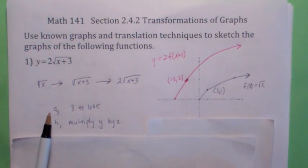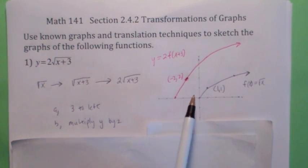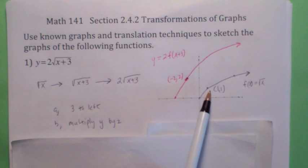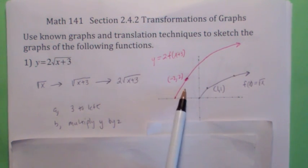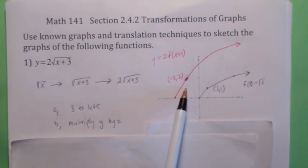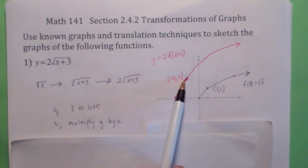The graph becomes this. You can think of it point-wise. What happens to the point (1, 1)? It gets moved 3 units to the left, so it becomes (−2, 1). And then you multiply the y-coordinate by 2, it becomes (−2, 2). So the point (1, 1) becomes the point (−2, 2).